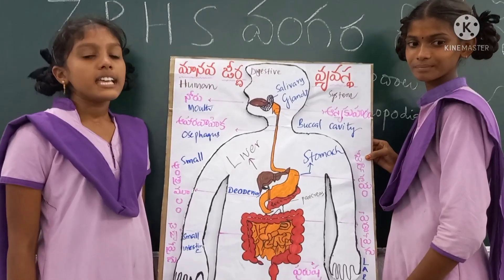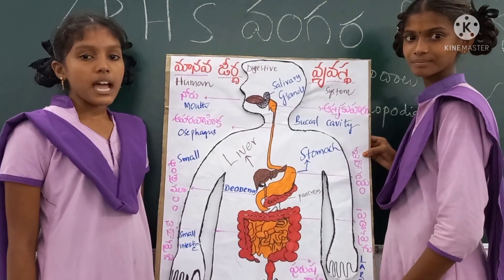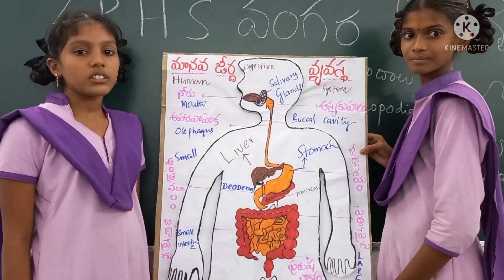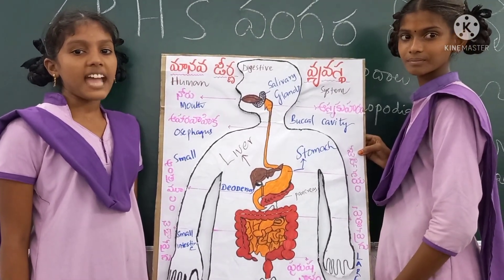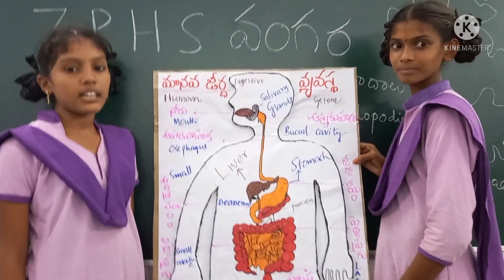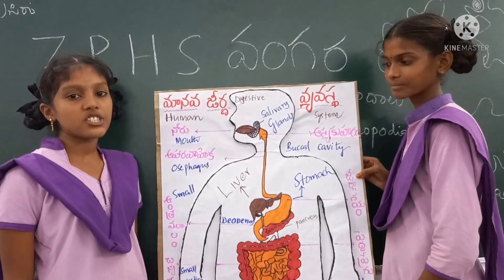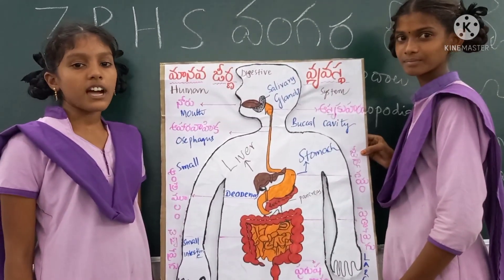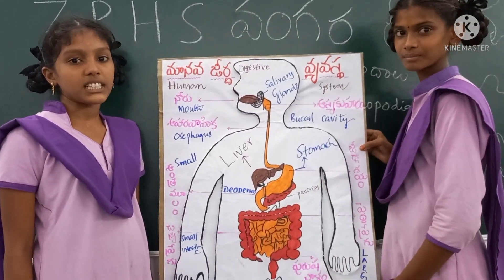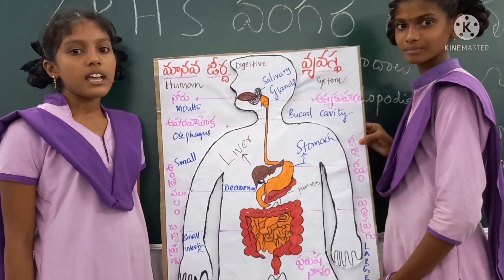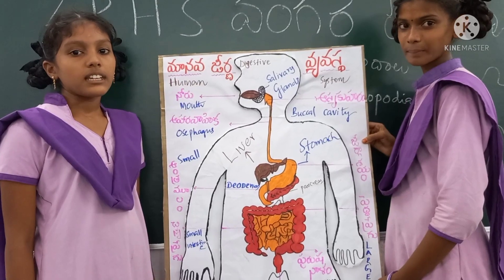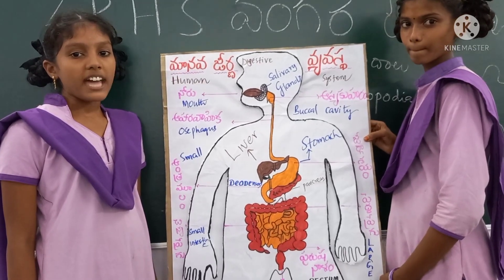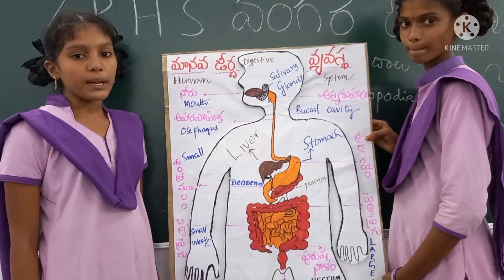Pharynx is a common chamber for both the digestive tract and respiratory tract. It leads to the Esophagus. Esophagus is a muscular tubular structure that connects the Pharynx to the Stomach.